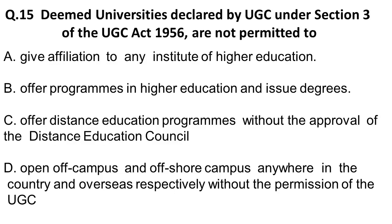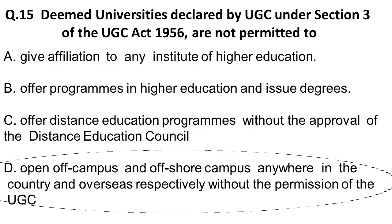The next question: deemed universities declared by UGC under Section 3 of UGC Act 1956 are not permitted to do what? They are permitted to give appellation to institutes of higher education, offer programs in higher education, issue degrees, and offer distance education programs. However, they cannot open off-campus or offshore campuses anywhere in the country and overseas respectively without the permission of UGC. So the correct answer is D.